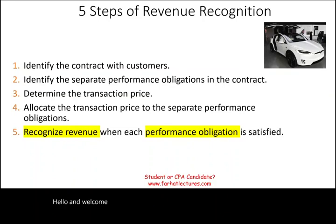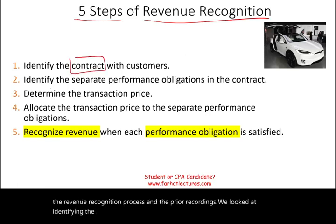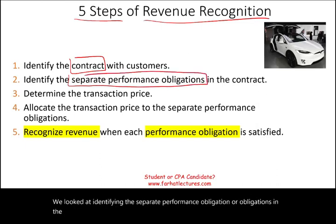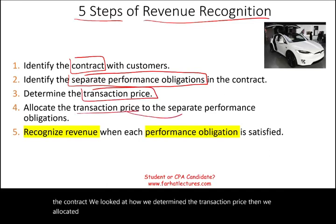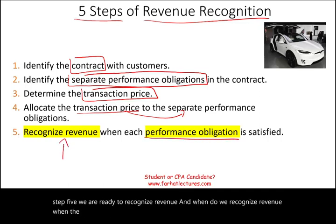Welcome to the session on step five of five for the revenue recognition process. In prior recordings, we looked at identifying the contract, identifying the separate performance obligations, determining the transaction price, and allocating the transaction price to those obligations. In step five, we are ready to recognize revenue — and we recognize it when the performance obligation or obligations are satisfied.